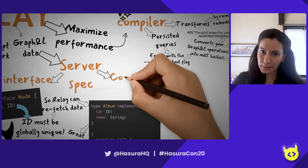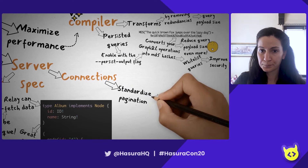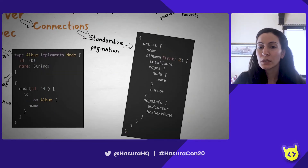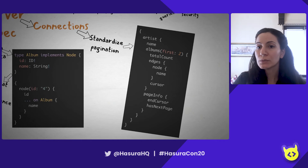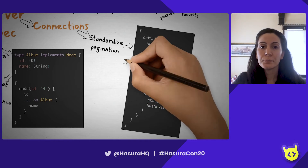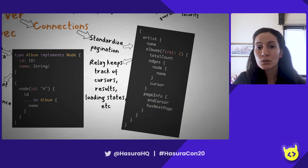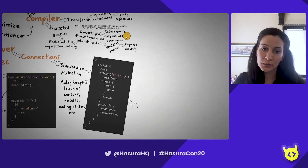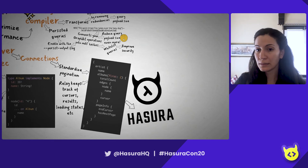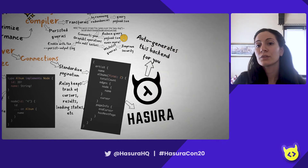The other thing with the server spec is connections. Connections are Relay's way of standardizing pagination. In Relay, you might have a query where you're getting the albums of an artist, you get the first two, and there's pagination info in there like cursors and whether there's a next page. Relay actually keeps track of the cursors, merging the results, loading states, and everything — so you don't have to keep track of that on the client side, but on the server side you still have to implement this. With Hasura, you don't have to implement this on the server side because Hasura auto-generates this backend for you.